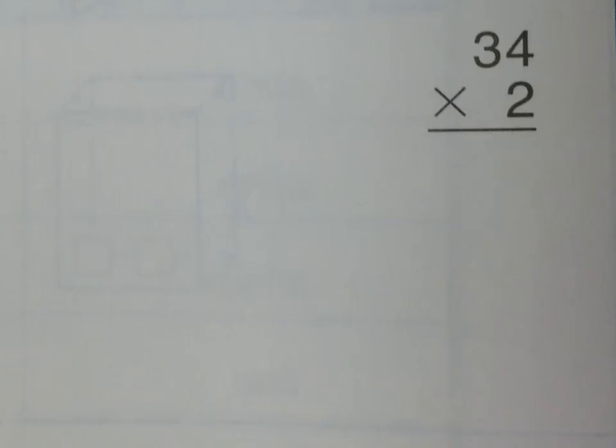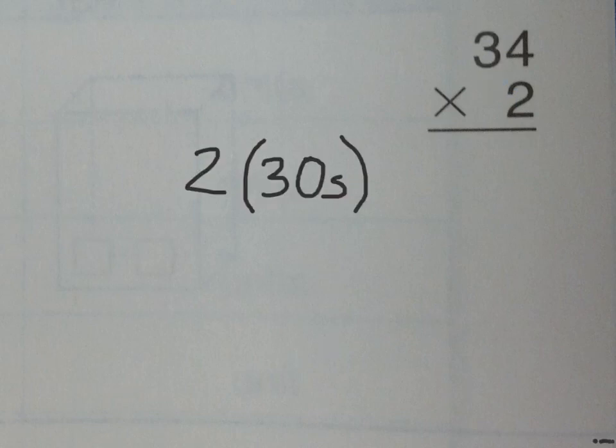Let's take a look at how this works. Here we have 34 times 2, and we're going to use the partial products algorithm to solve this. We multiply 2 by each digit of 34. We start with the tens place - 2 times 30. If you know 2 times 3 is 6, then 2 times 30 is 60. We write that on the side.